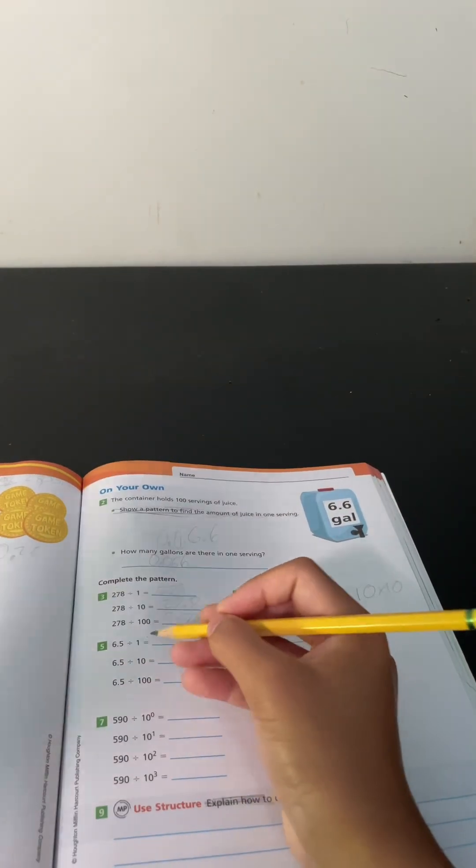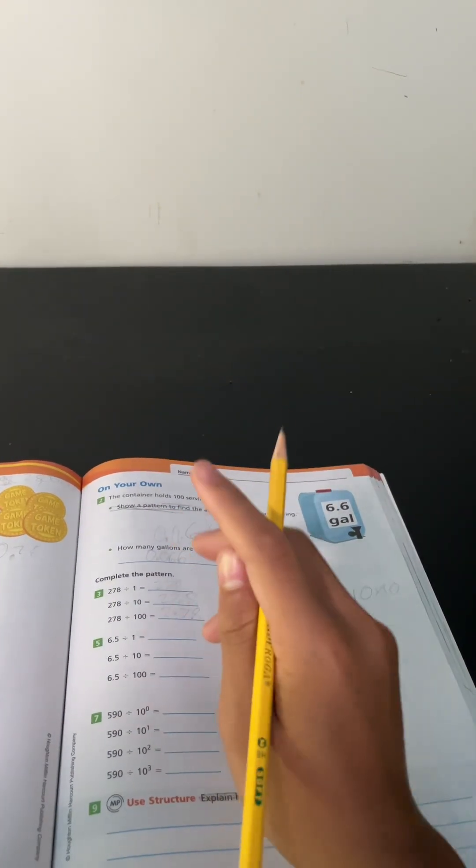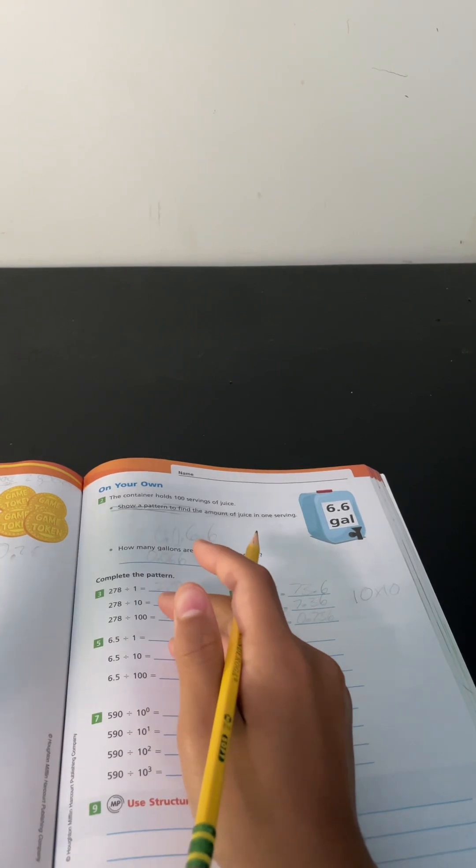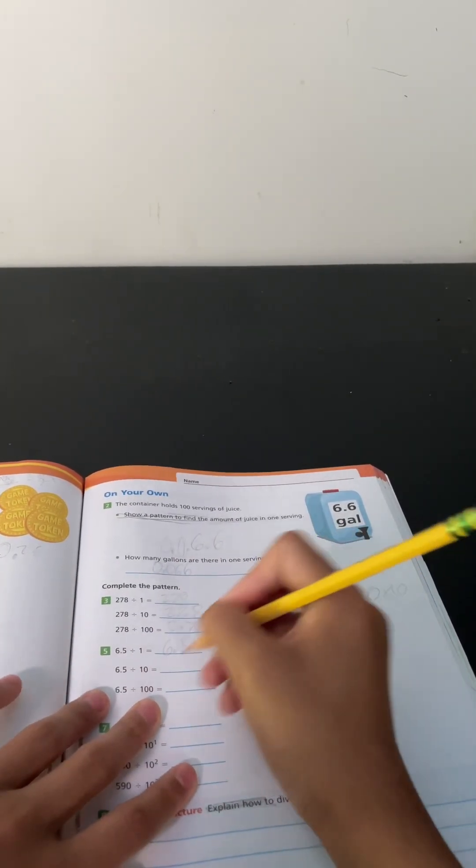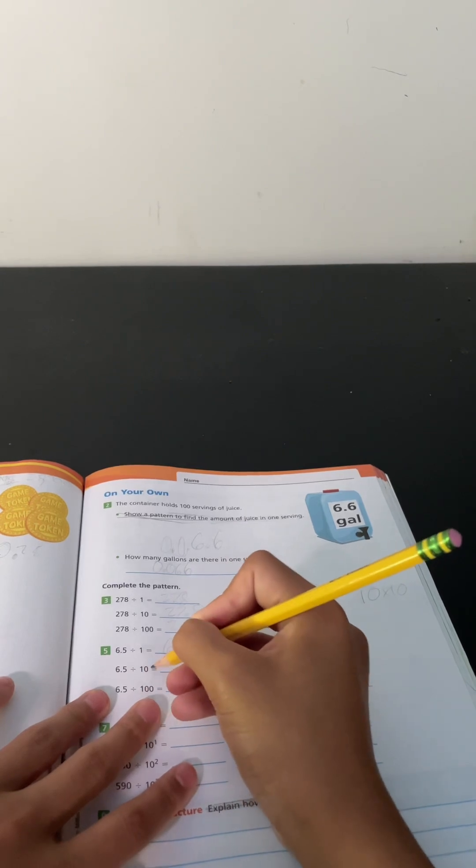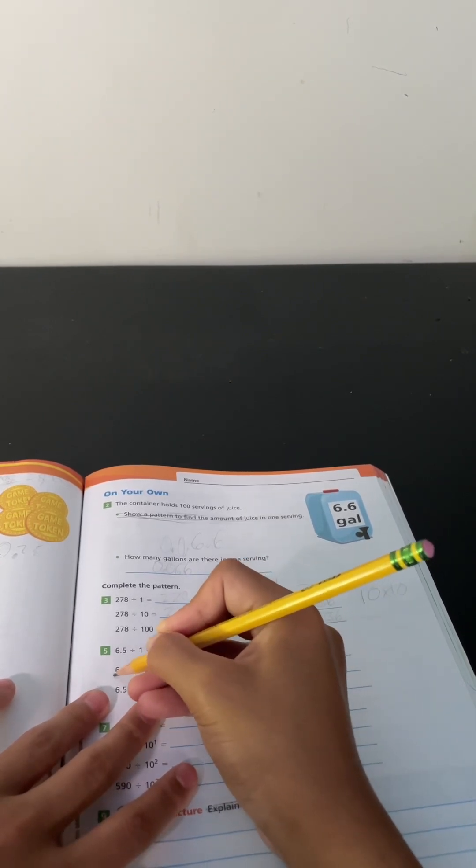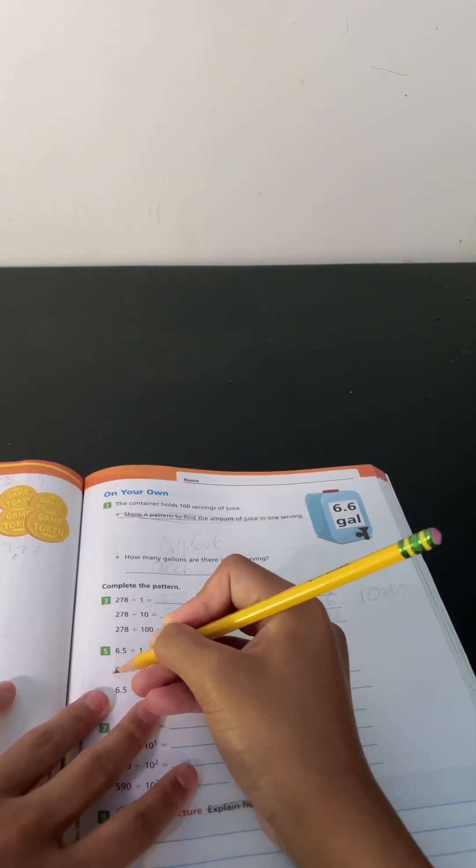6.5 divided by 1. 6.5 divided by 10. 6.5 divided by 10 is equal to 0.65.